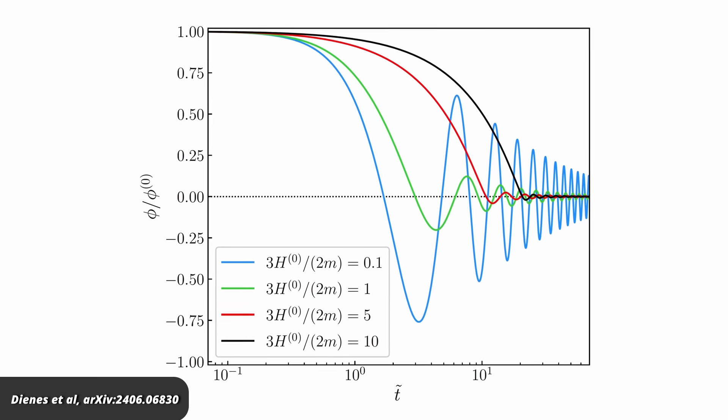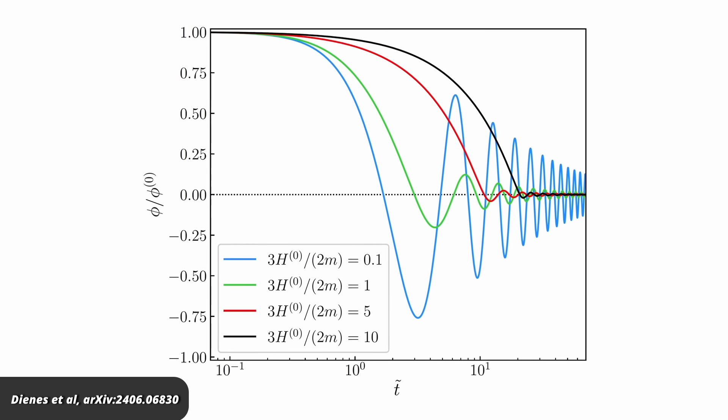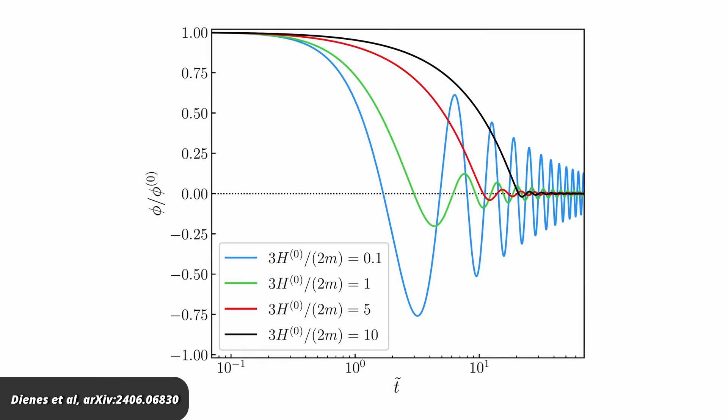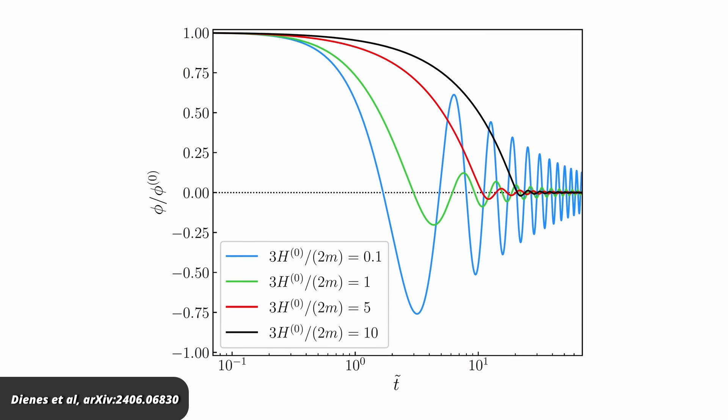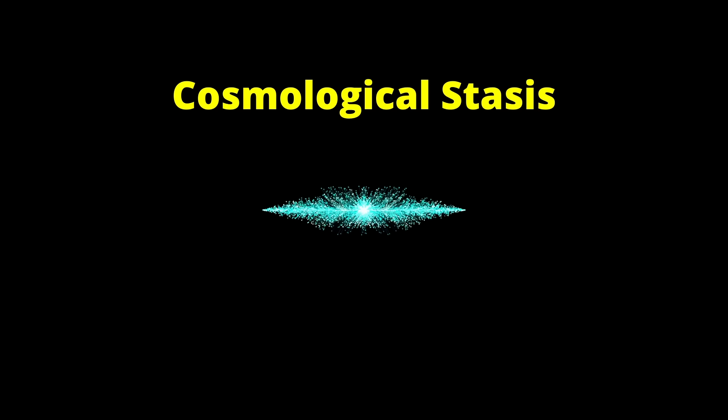...then this energy will gradually decay down the tower. And while this happens, the radial decay creates pressure that expands the universe very rapidly and very steadily. This is the cosmological stasis.